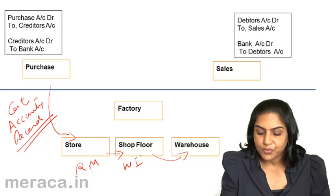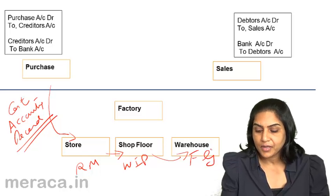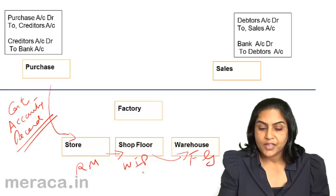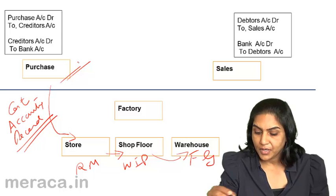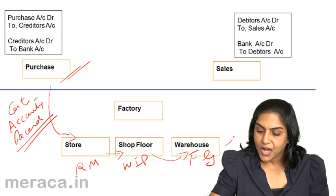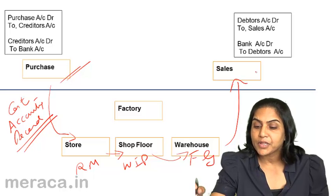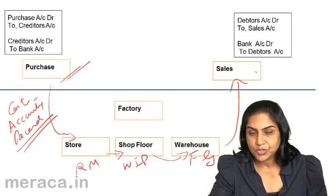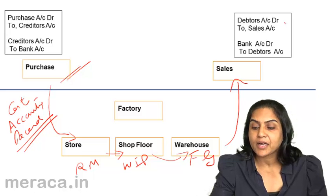At each stage there would be some kind of accounting entry while these records are maintained in the costing books. In the financial books we stop with the recording of the purchase. The finished goods are later sold — the moment the goods are sold, entries are passed in the financial books: debtors debit to sales, and when money is collected, bank account to debtors.